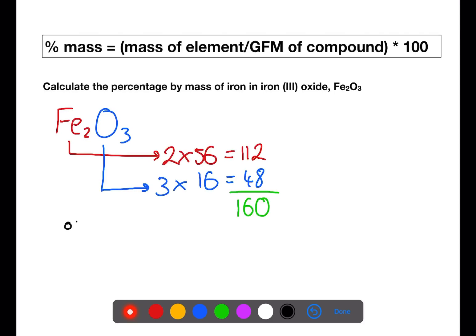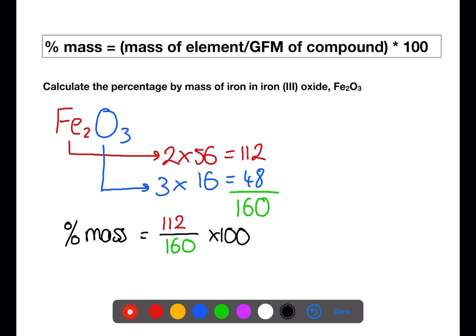To find the percentage mass, we take the mass of the iron which is 112, divided by the total mass 160, and multiply by 100. This gives a percentage of iron in the compound as 70%.